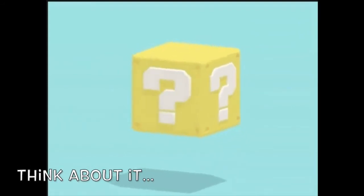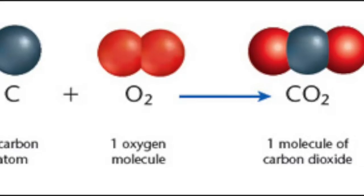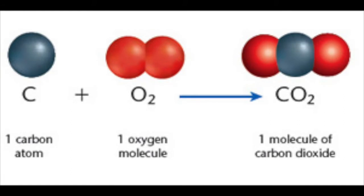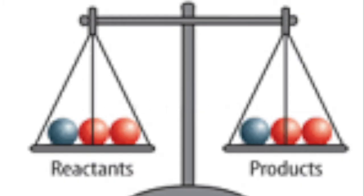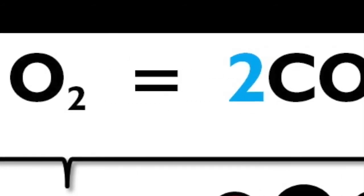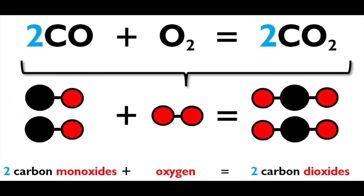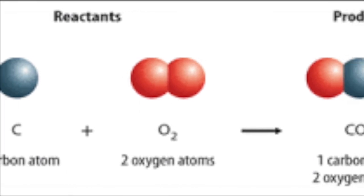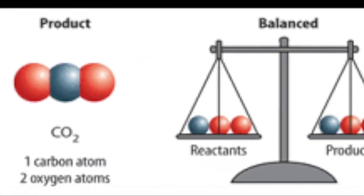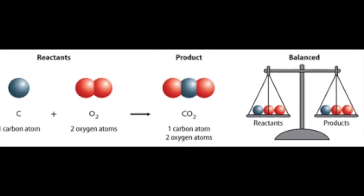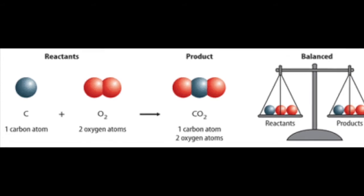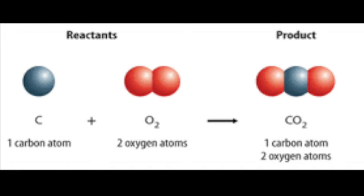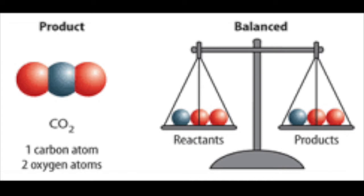How have the atoms of the reactants been rearranged in the products? The bonds between the oxygen atoms in the oxygen molecule have been broken, and new bonds have formed between the carbon atom and the two oxygen atoms. Is the equation balanced? All chemical equations, like math equations, must balance — there must be the same number of each type of atom on both sides of the arrow, because of the law of conservation of mass. Counting atoms on both sides of C + O2 → CO2 confirms the equation is balanced.